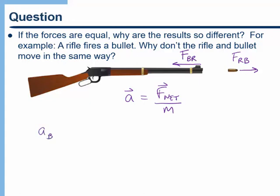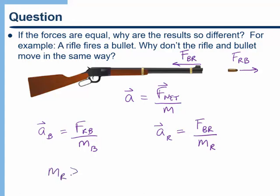The acceleration of the bullet is the net force on the bullet — the force the rifle exerts on the bullet — divided by the mass of the bullet. The acceleration of the rifle is the force the bullet exerts on the rifle divided by the mass of the rifle. The mass of the rifle is much, much greater than the mass of the bullet (written mathematically with two greater-than signs). Therefore, the acceleration of the bullet is much, much greater than the acceleration of the rifle.